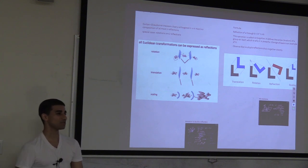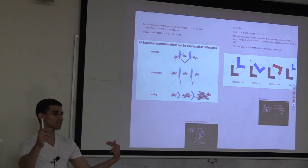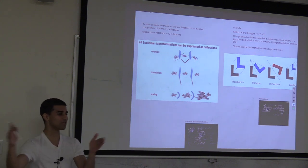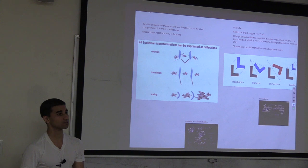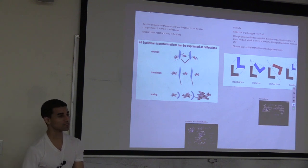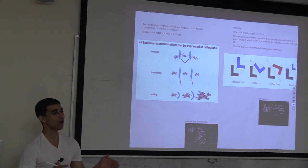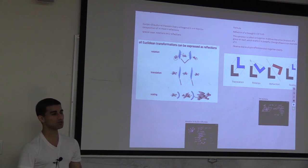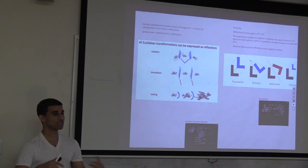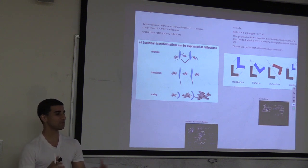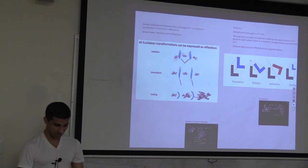The theorem at the top left: any orthogonal transformation from n-space to n-space requires at most n reflections. So you always have a bound on how many reflections you need. This gives you a reflection calculus - a whole calculating system built from reflections.